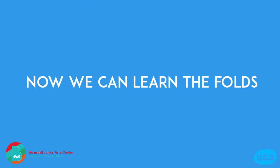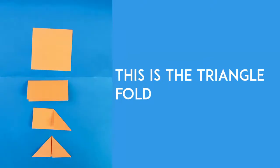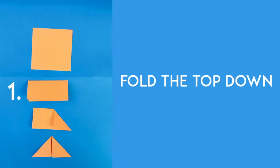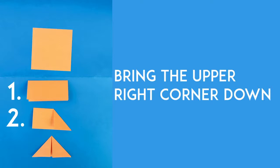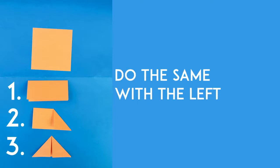Now we can learn the folds. This is the triangle fold. 1. Fold the top down. 2. Bring the upper right corner down. 3. Do the same with the left.